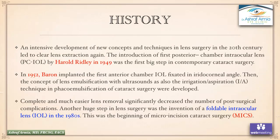Continuing the history of refractive lens exchange: an intensive development with new concepts and techniques in lens surgery in the 20th century started with clear lens extraction. The introduction of the first posterior chamber intraocular lens was by Harold Ridley in 1949, which was the first big step in cataract surgery. In 1952, Barron implanted the first anterior chamber IOL fixated on the iridocorneal angle. The concept of phacoemulsification with irrigation-aspiration technique was then developed, enabling more complete and easier lens removal and significantly reducing post-surgical complications. The invention of foldable intraocular lenses in the 1980s marked the beginning of micro-incision cataract surgery.